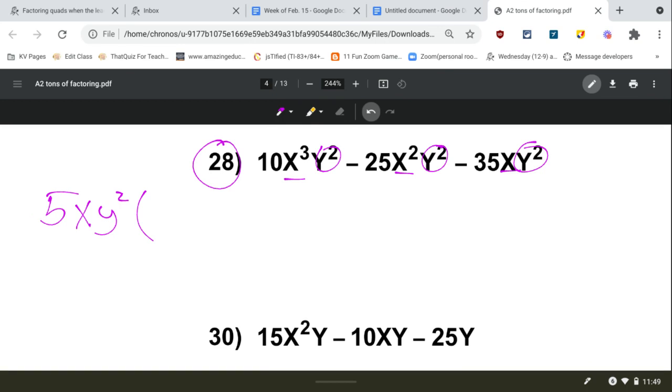So the first term is going to become a 2, and it'll be an x squared. So that way I have x and x squared to give me x to the third power. Then it's a minus 5x, and then a minus 7. You would want to distribute this back in just to make sure that you factored it out right.